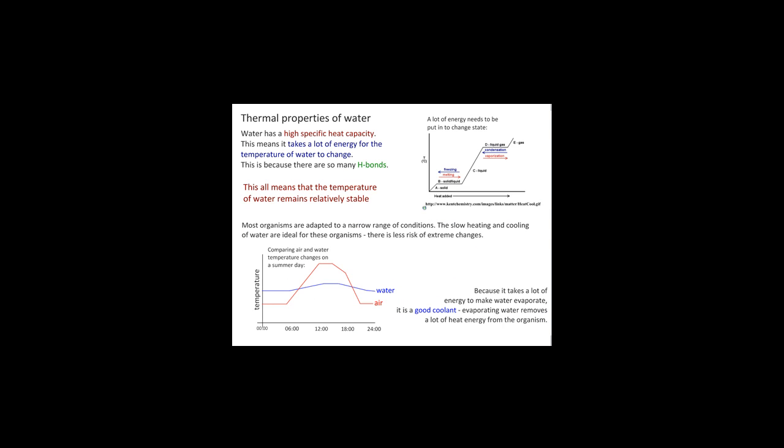Okay, water also has some very important thermal properties. One of those is that it has a high specific heat capacity. This basically means that it takes a lot of energy for the temperature of water to change. This means that the temperature remains relatively stable, which is useful for organisms because many organisms are adapted for only a narrow range. So this slow heating and slow cooling of water is ideal for many organisms because there is less risk of massive fluctuations in temperature.